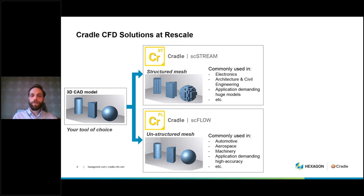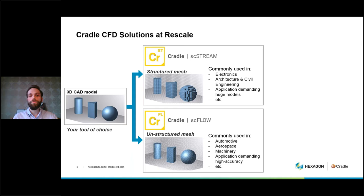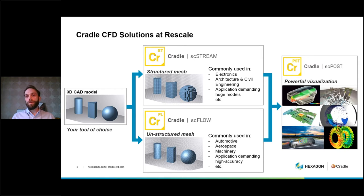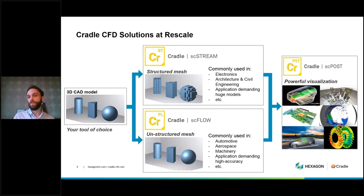The other product is SC/Flow, which I spoke about earlier. Rather than boxing geometry out with voxels or structured mesh, SC/Flow uses an unstructured mesh that accurately models the exact shape of the objects being simulated. This approach uses more advanced modeling techniques and is commonly used in aerospace, automotive, and machinery applications — wherever high accuracy is demanded. We bundle both products with our post-processor, which provides powerful visualization. All the graphics in this presentation come from that post-processor.